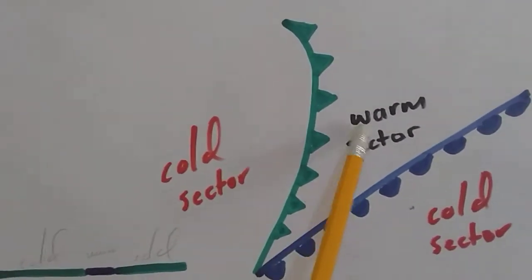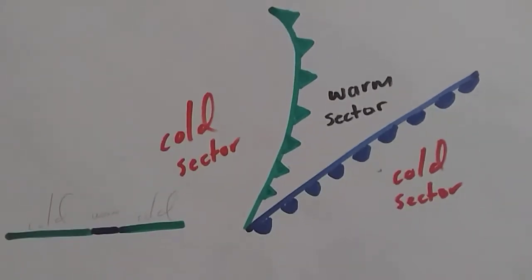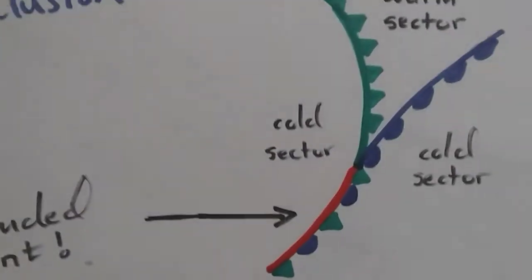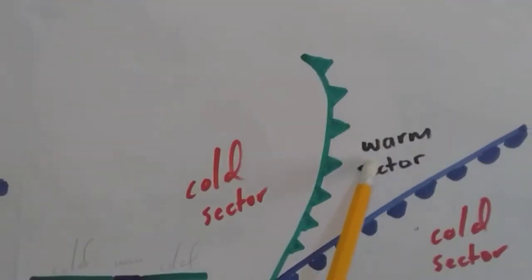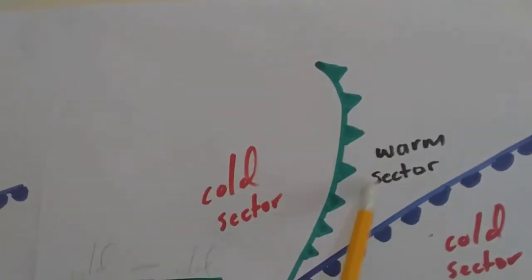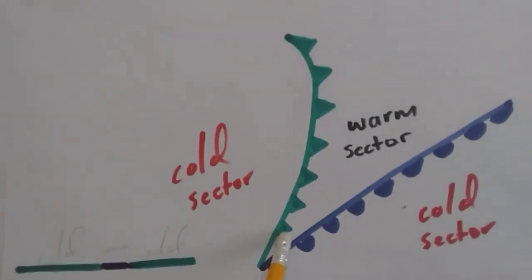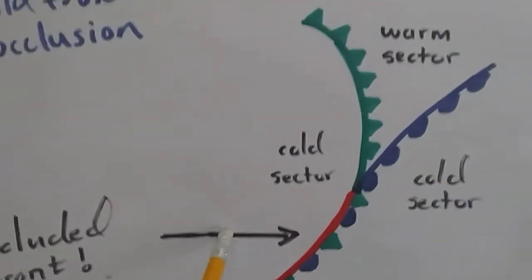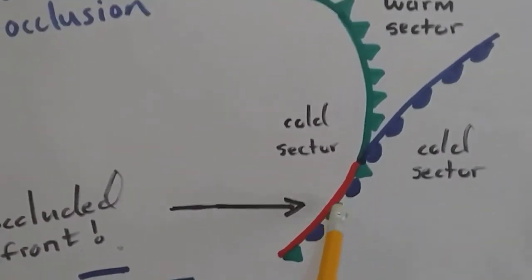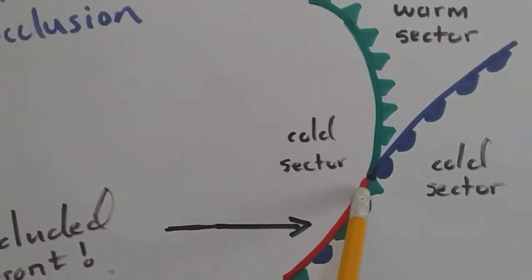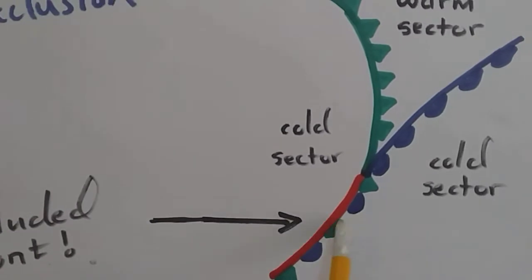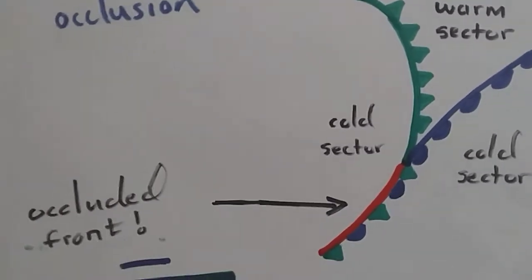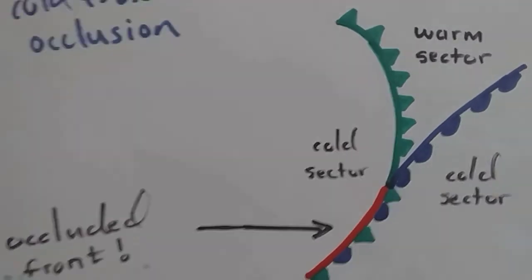Once all the warm air in the warm sector has been uplifted off the surface, the merging occurs. This is what becomes of it — this is your occluded front right here. You can see the triangles and the semicircles together. That is how the process of occlusion occurs.